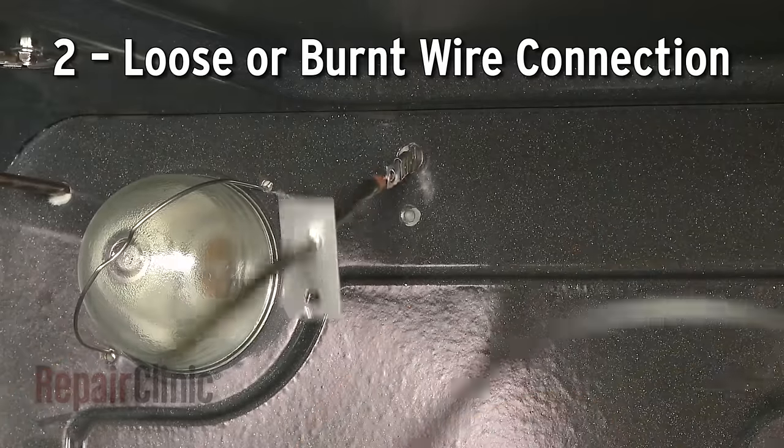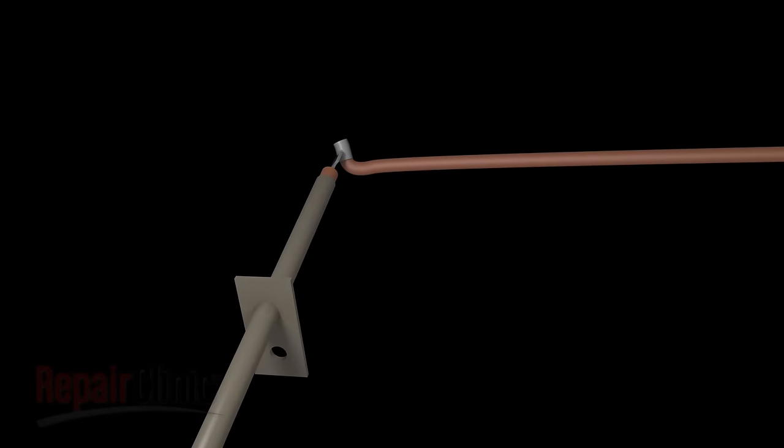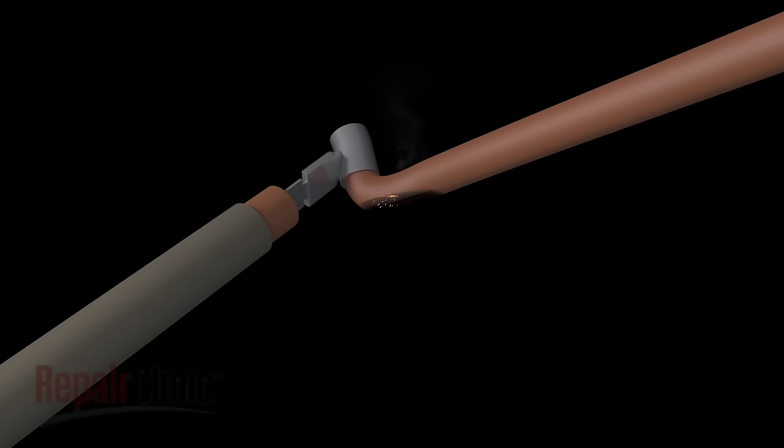A loose or burnt wire connection could also be responsible for the oven not working. The bake or broil power supply wires will commonly burn out near the heat source and will appear visibly damaged.